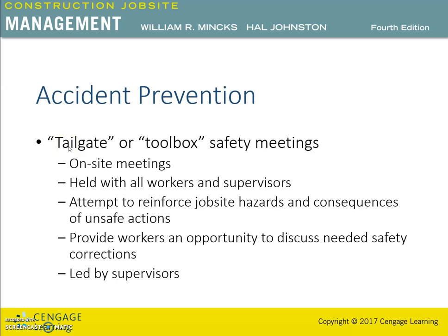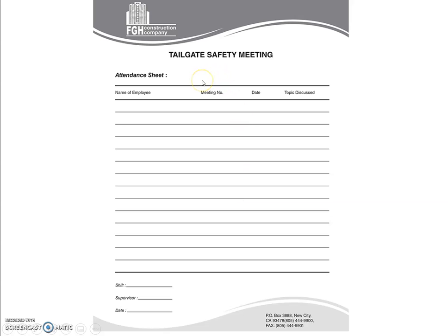As we are talking about the tailgate or toolbox meetings, here is a sample form for tailgate safety meetings. This form basically lists the employees who attend the meeting — employee name, meeting number, date, and the topics discussed are listed. It is good practice to keep a record of these tailgate meetings.